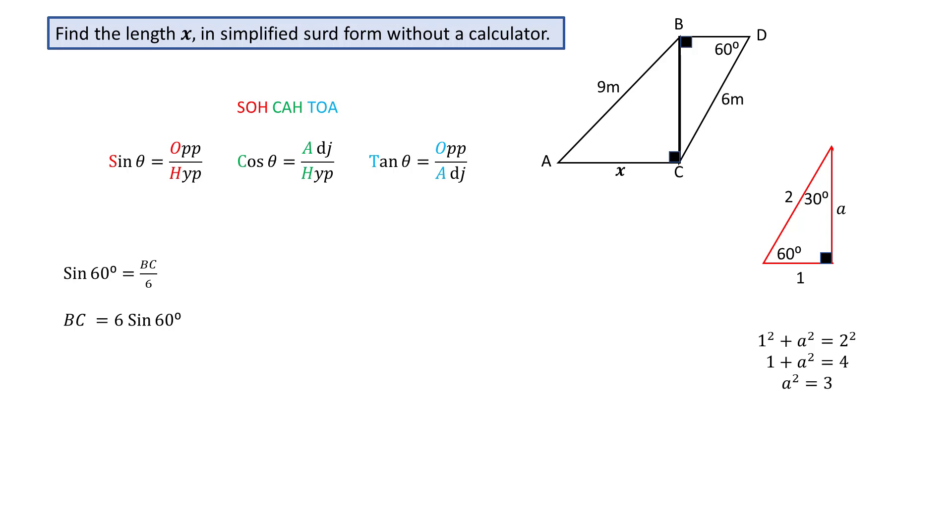Evaluate the squares. Subtract 1 from both sides. And finding the square root gives a equal to root 3, which is now recorded on the diagram.